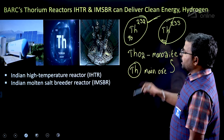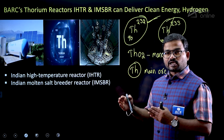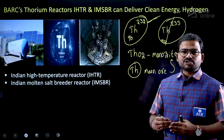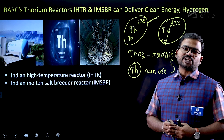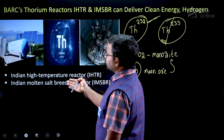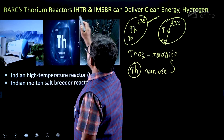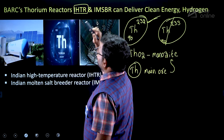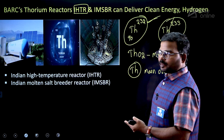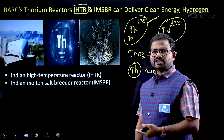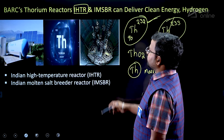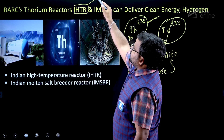India has a large bulk content of thorium, and research is ongoing to utilize it in reactors. One such reactor is the IHTR — Indian High Temperature Reactor. Another is the IMSBR — Indian Molten Salt Breeder Reactor. Both are developed by BARC, Bhabha Atomic Research Centre, headquartered in Mumbai.